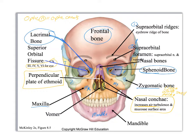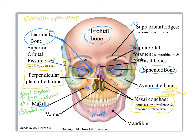Three things create the nasal septum: the vomer, the perpendicular plate of the ethmoid, and number three, the septal cartilage — that's just hyaline cartilage. When you pierce your nose, you're actually putting it through the cartilage. The bone is posterior to that septal cartilage.